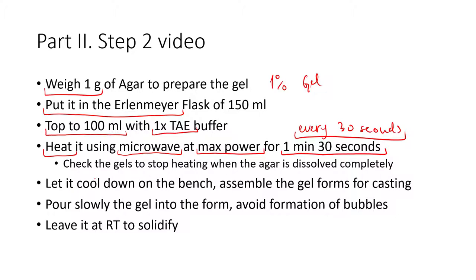When it's totally transparent you can remove it from the microwave and let it cool down on the bench. While it's cooling down you can assemble the forms in which you are going to cast the gel. Then after we obtain about 45 degrees celsius we can slowly pour the gel into the form and you want to avoid the formation of bubbles.